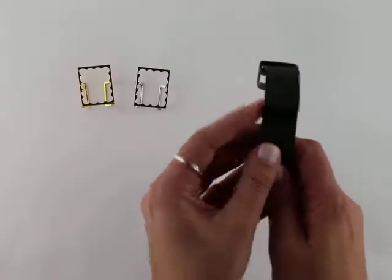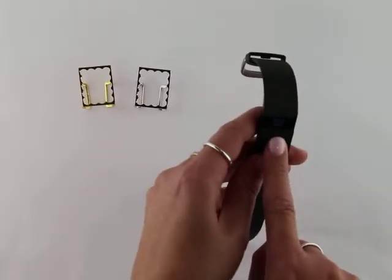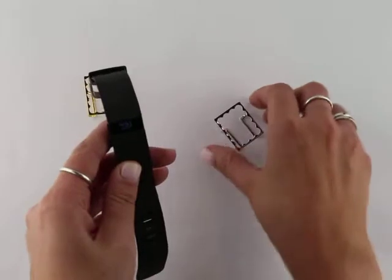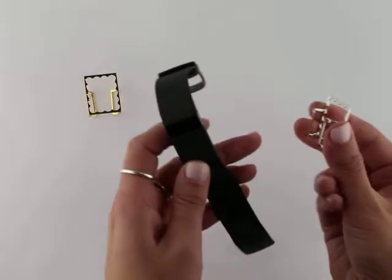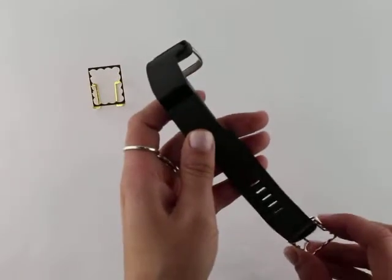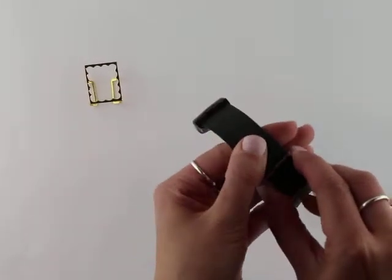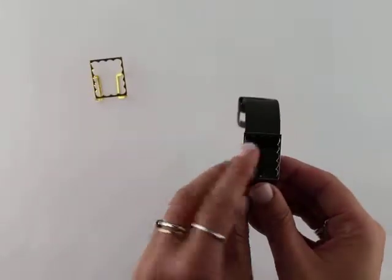Orient the tracker so the display screen is facing up. Take your Chloe slide holding it by the base where the prongs are. Slide it up over the band until you can see the full display screen.